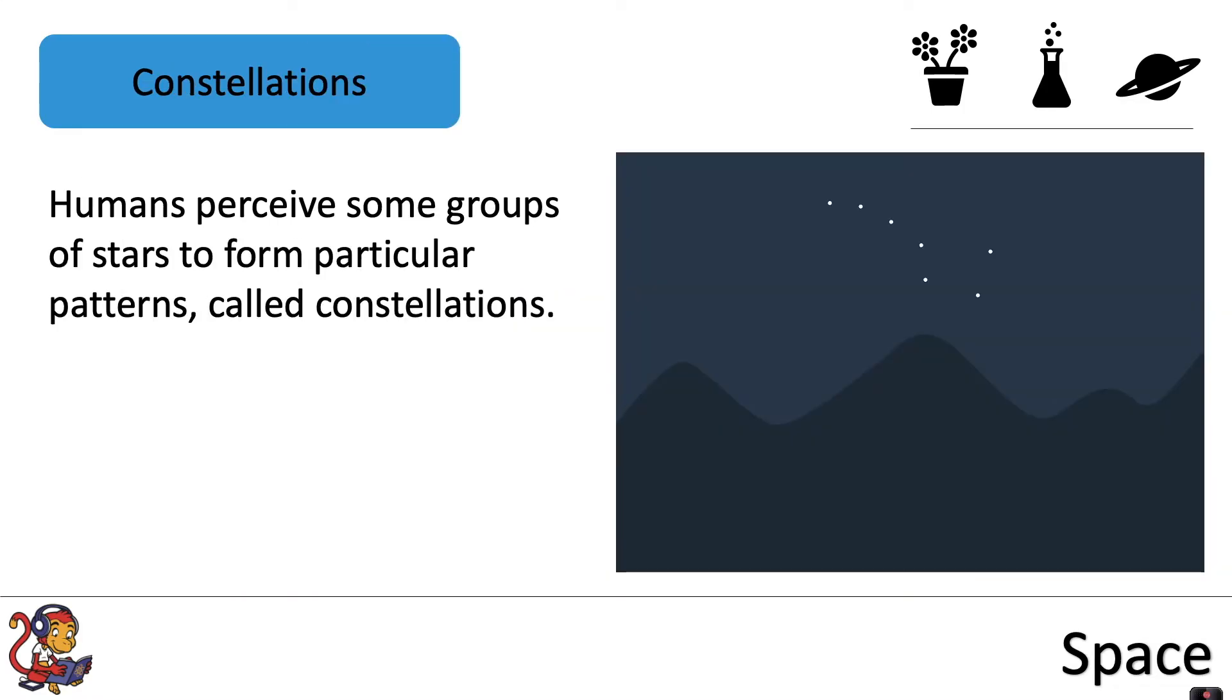Humans perceive some groups of stars to form particular patterns called constellations. This is the Ursa Major constellation and it's part of the Milky Way.